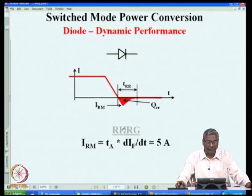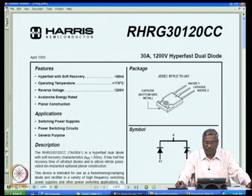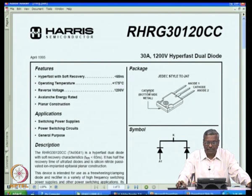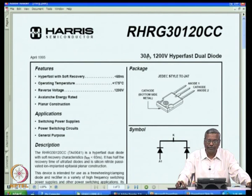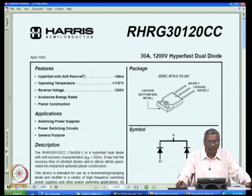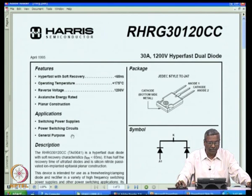What we see here is the datasheet of a particular hyperfast dual diode — two diodes in one package with K as the midpoint and two anodes. You can connect them together as a single diode or use them in a center-tapped rectification application. The cathode is the metal/middle tag. This device is a 30-ampere, 1200-volt hyperfast dual diode capable of carrying 30 amperes and blocking 1200 volts. Fast diodes have recovery time specified — 65 nanoseconds in this case. Operating temperature is limited to 175 degrees.